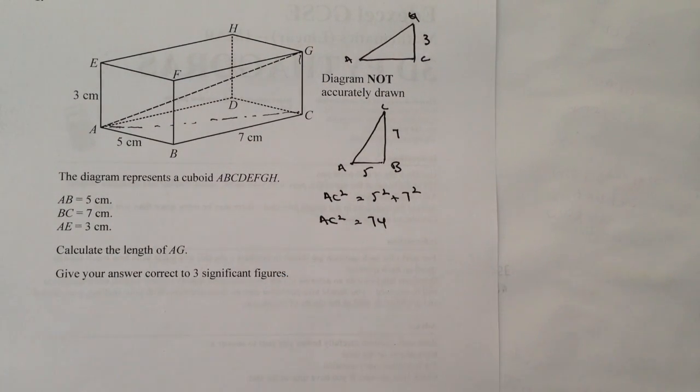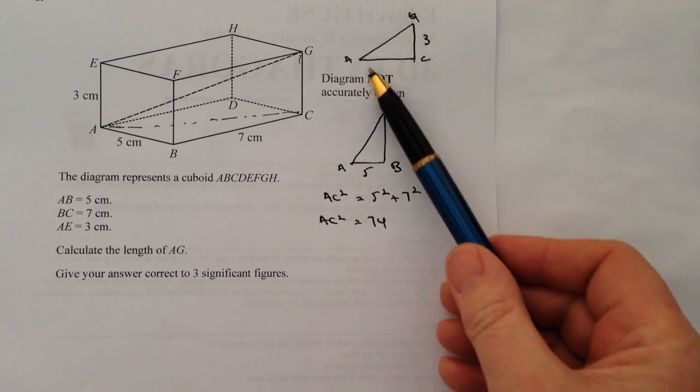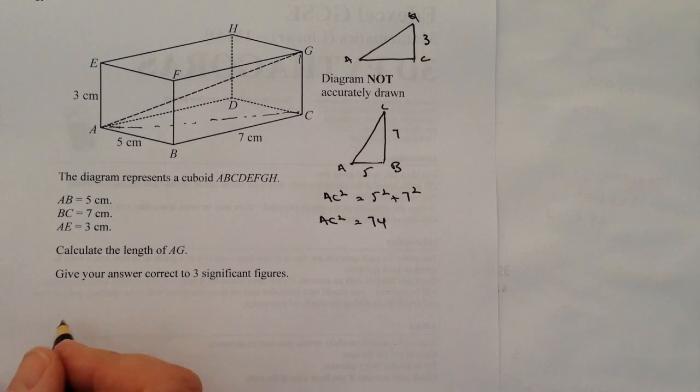Now you could go ahead if you wanted to and just calculate that out, and it works out at something like 8.6023252. But my suggestion is you leave it as AC squared because when we're working out this top calculation here, we've got AG squared equals AC squared plus CG squared.